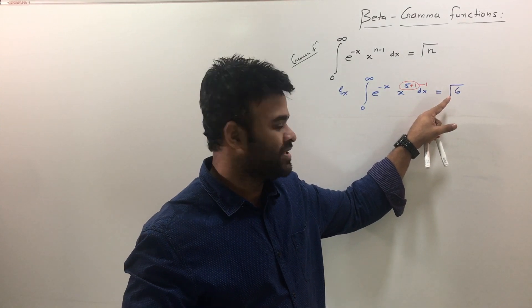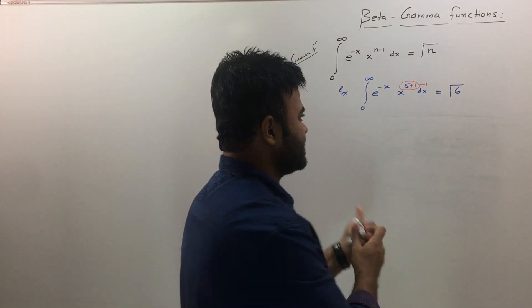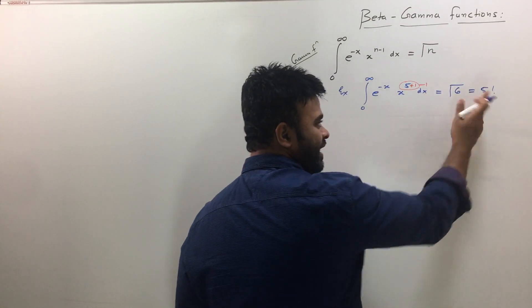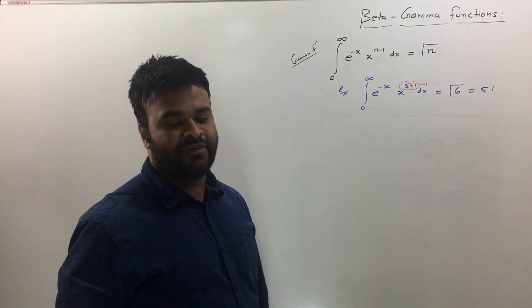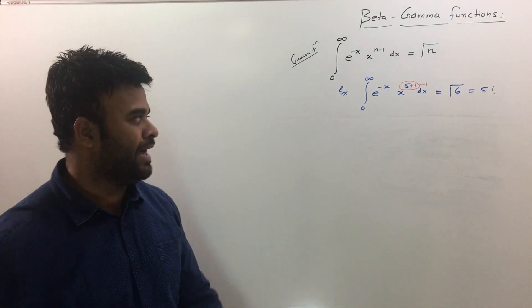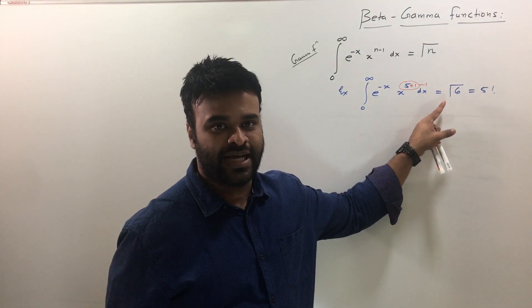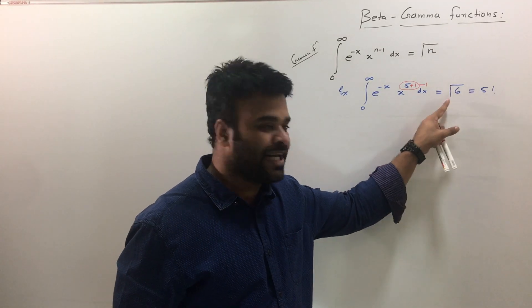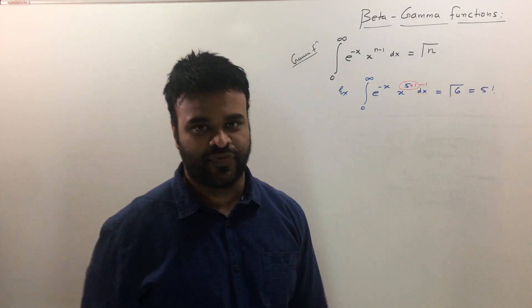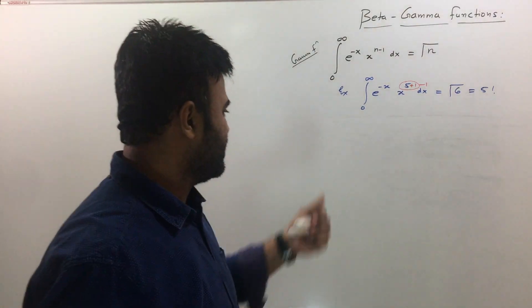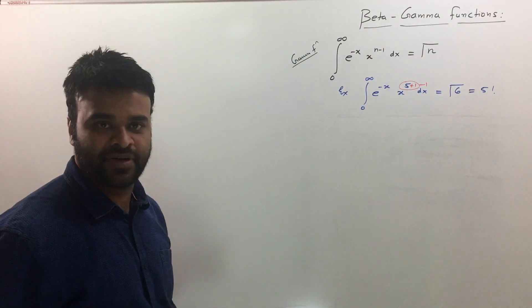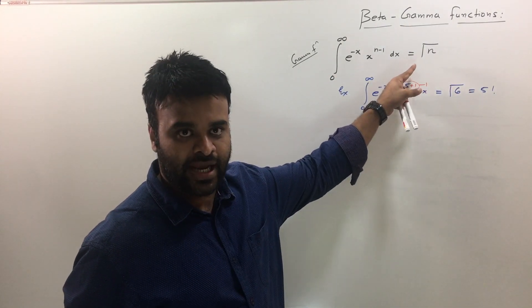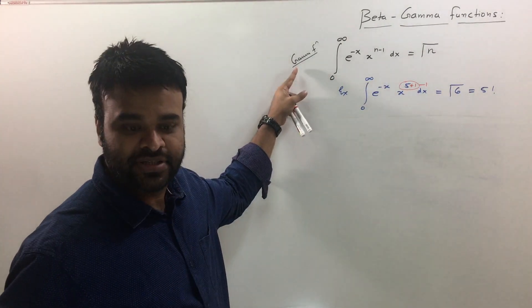Now gamma 6 is very easy to find, gamma 6 is just 1 less factorial. What I mean is you can write down gamma 6 as 5 factorial, 6 minus 1, 5 factorial is the way to write gamma. So if you have gamma n you will just write it as n minus 1 factorial. So gamma 6 becomes 5 factorial, gamma 10 would be 9 factorial and so on. So this is how we write down the values of gamma function.